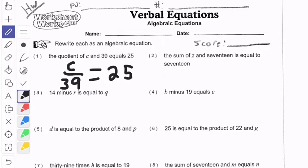So that means C divided by 39 equals 25. So you don't need to solve this, just leave it like that. Let's look at one or two others.